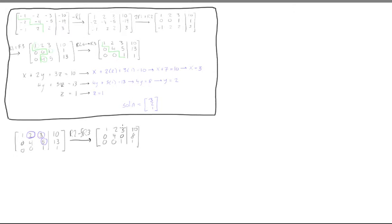Alright, so now we also, another goal of this reduced row echelon form is we want all the leading entries to be one. So what we can do here is we can multiply this row by one-fourth, or divide it by four. So the next step we have is one-fourth R2.